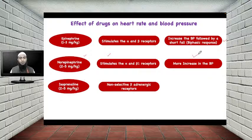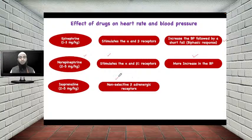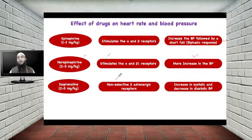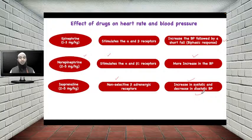The third drug is isoprenaline. Isoprenaline is a non-selective beta adrenergic receptor agonist, meaning it acts on both beta-1 and beta-2 receptors — it is not selective for only one subtype. It causes an increase in systolic blood pressure and a decrease in diastolic blood pressure. However, if you look at the overall effect, isoprenaline produces a net decrease in blood pressure.